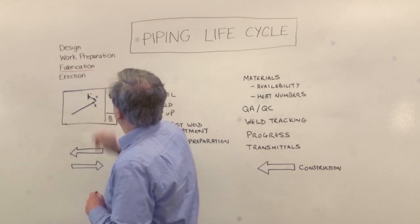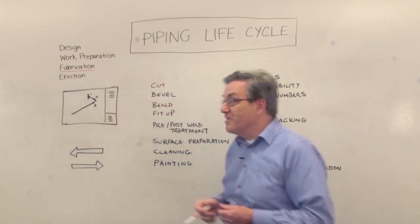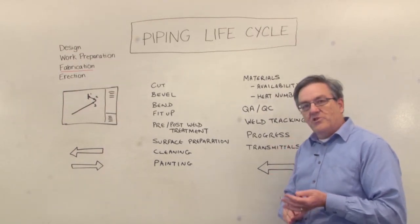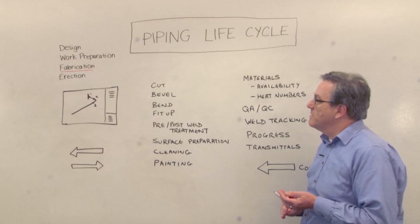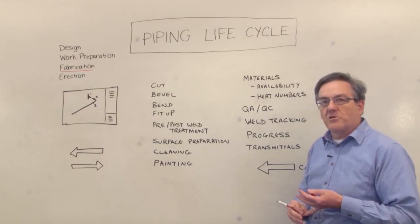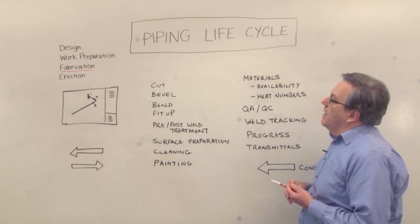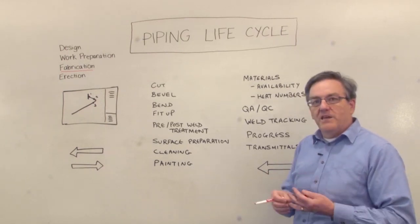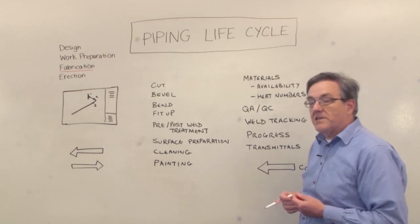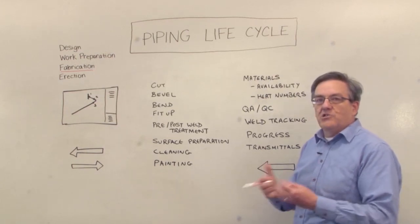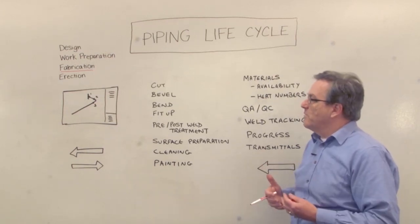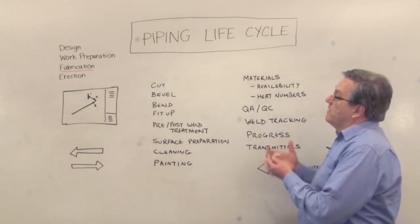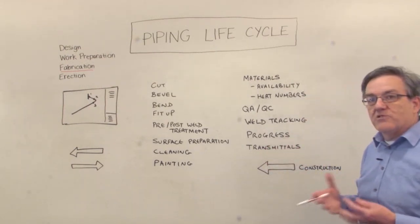We've covered the two earlier stages, and you can go back and view those videos if you like. We talked about how we generate information in the 3D piping model and how we pass that on to work preparation. We've emphasized the importance of data — being able to pass data through these various stages — and how in each stage we add some information, generate additional data and documents, and then pass that on to subsequent stages.